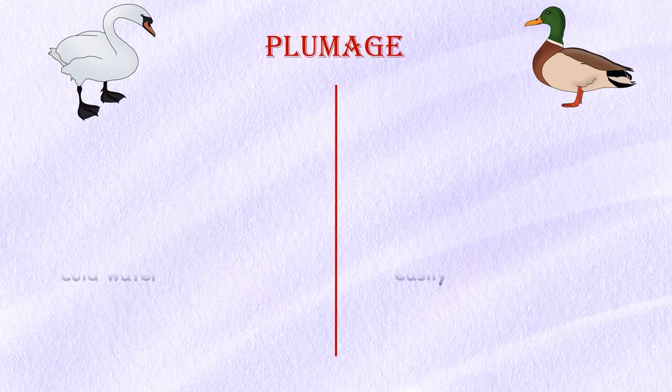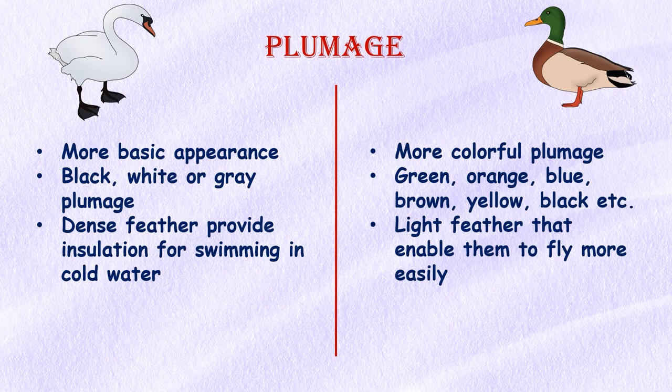Plumage: Ducks are found in a wide variety of colors and feather patterns, while swans have more basic appearances overall. Swans are found in black, white, or gray plumage, while ducks range in colors from green, orange, blue, brown, yellow, and black. Further, swans have denser feathers that provide better insulation for swimming in cold water, while ducks have lighter feathers that enable them to fly more easily.